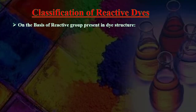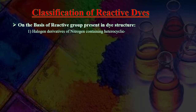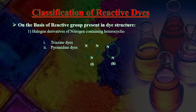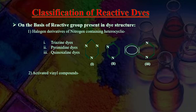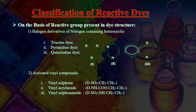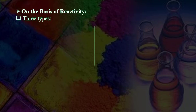Classification of reactive dyes on the basis of reactive group present in the dye structure: (1) Halogen derivatives of nitrogen-containing heterocyclics — triazine dyes, pyrimidine dyes, quinoxylene dyes. (2) Activated vinyl compounds — vinyl sulfone, vinyl acrylamide, vinyl sulfonamide.